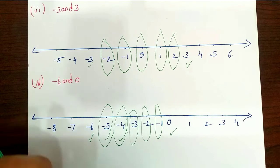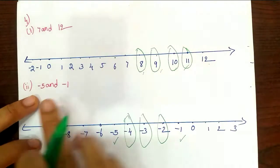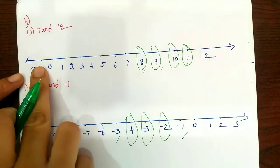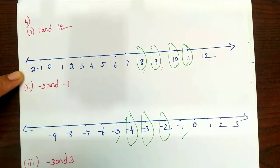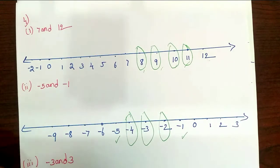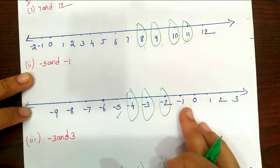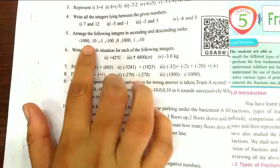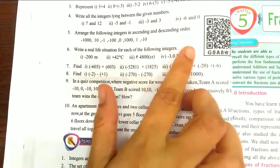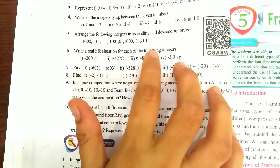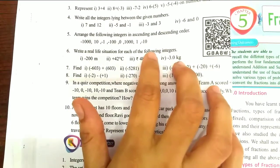I want to show you the number line to illustrate the values. Negative values are to the left and positive values are to the right. Now the next problem: arrange the following integers in ascending and descending order. Ascending order means small to big. Descending order means big to small.